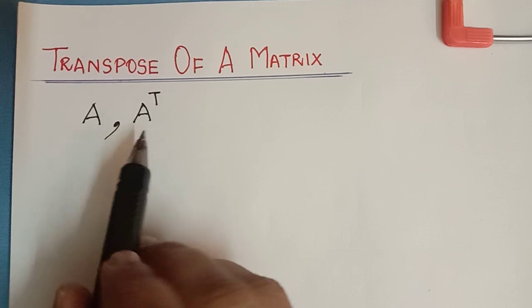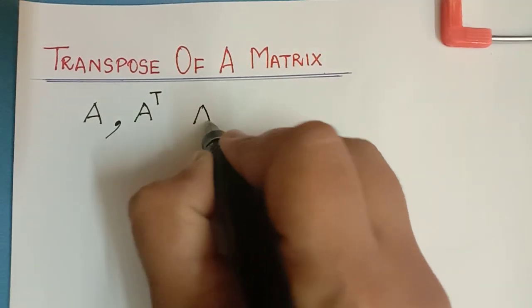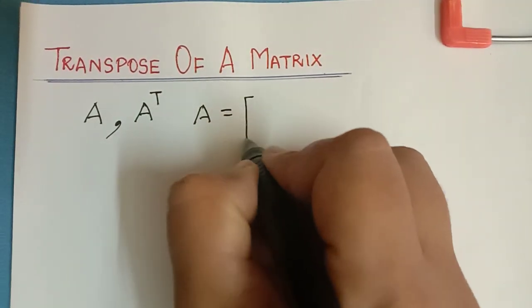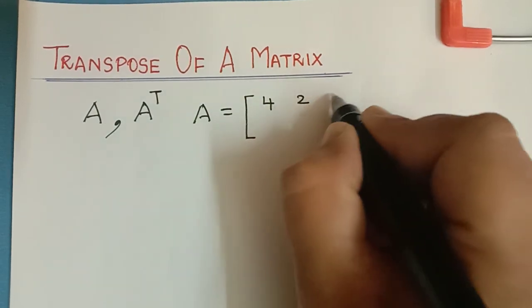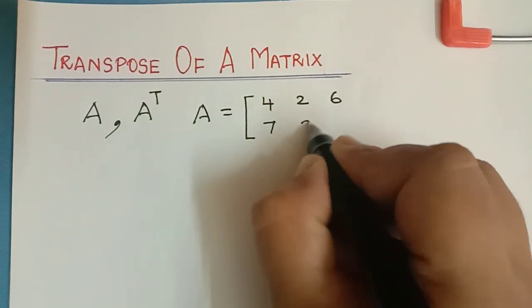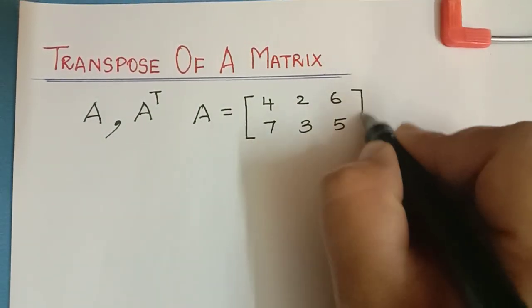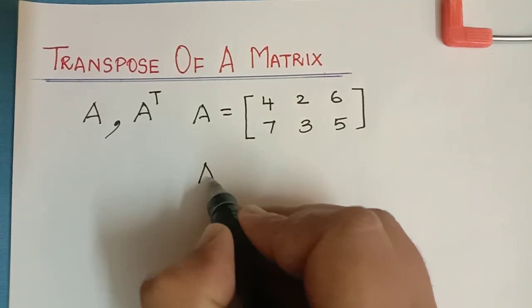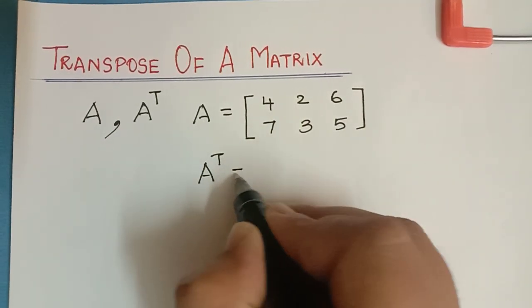For example, we will consider a matrix A which is equal to 4, 2, 6, 7, 3, 5. The transpose of this matrix will be A transpose equal to: